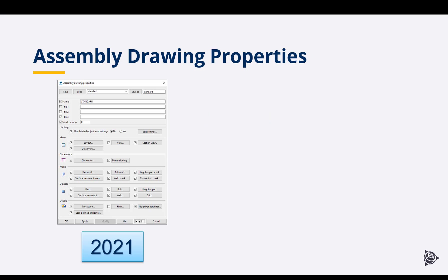To give some imagery of what we're going to be looking at, your assembly drawing properties in 2021 — shown on the left — are showing standard properties. Everything is organized with view layouts, dimension properties, mark properties, and object properties, but that's affecting every view on the sheet.